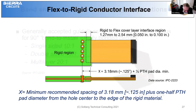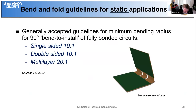In regard to bends and folds, the generally accepted guidelines for a minimum bend radius for a 90-degree bend to install product depend on how many copper layers you're dealing with. For single-sided copper, a 10 to 1 radius is specified; the same is true for double-sided; but for multi-layer, 20 to 1 is required. That's for a bend to install — it's a static application, not dynamic; it's a one-time bend.